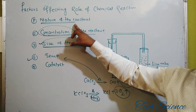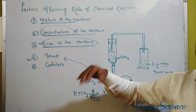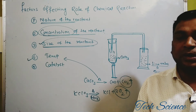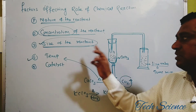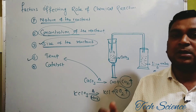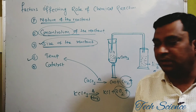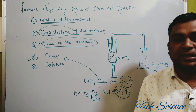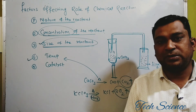In summary: number one, nature — if the reactant is more reactive, the rate of chemical reaction is greater; if less reactive, rate decreases. Concentration — concentrated solutions give a greater rate; dilute solutions give a lower rate. Size of the reactant — smaller size means greater rate; greater size means lower rate. Temperature — increase in temperature results in increase in rate of reaction. And presence of catalyst also increases the rate of chemical reaction. I hope you understand the video. Please subscribe to the channel and press the bell icon for further notifications.